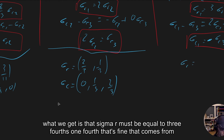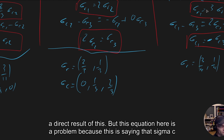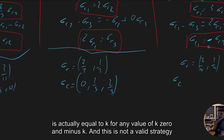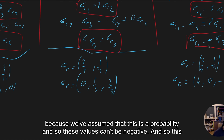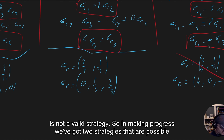For scenario 3, sigma_r equals (3/4, 1/4), which is fine. However, sigma_c comes out as (k, 0, minus k) for any value k — this is not a valid strategy, because probabilities cannot be negative. So scenario 3 is eliminated.